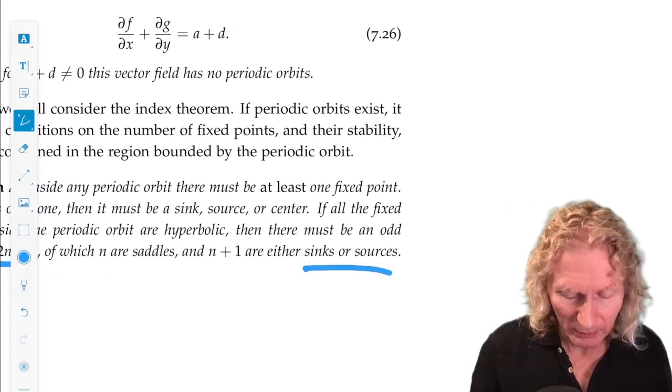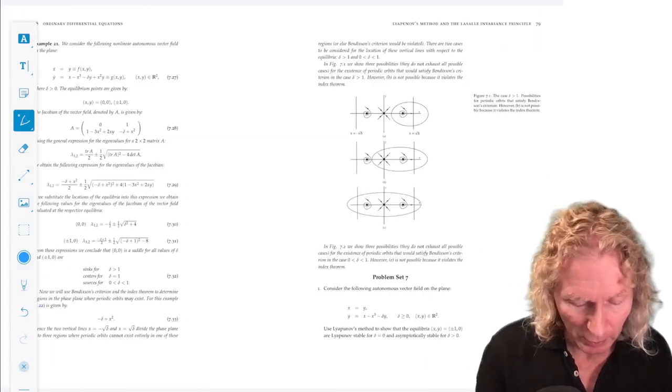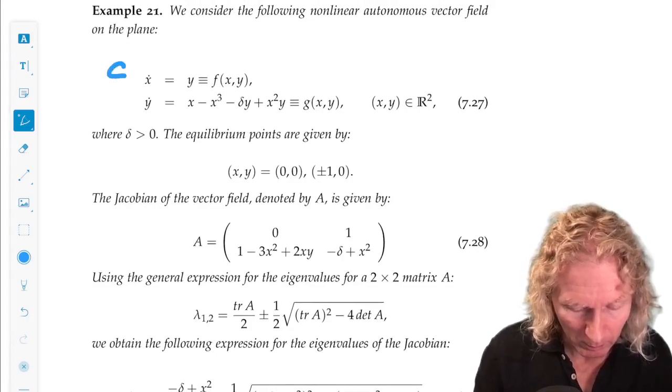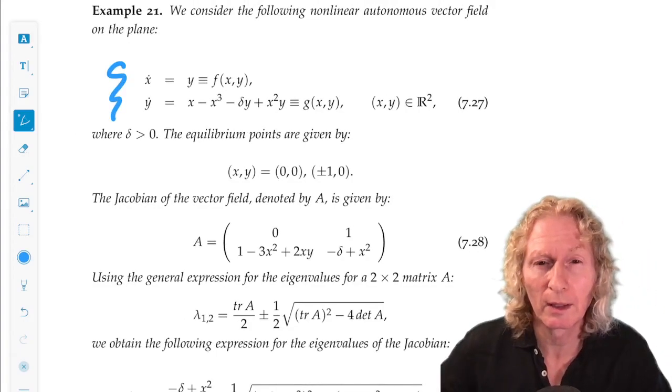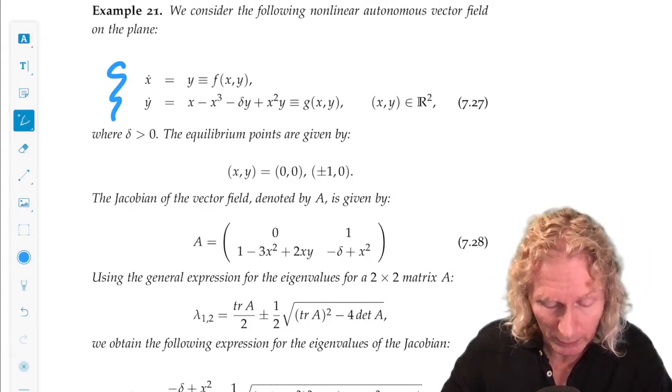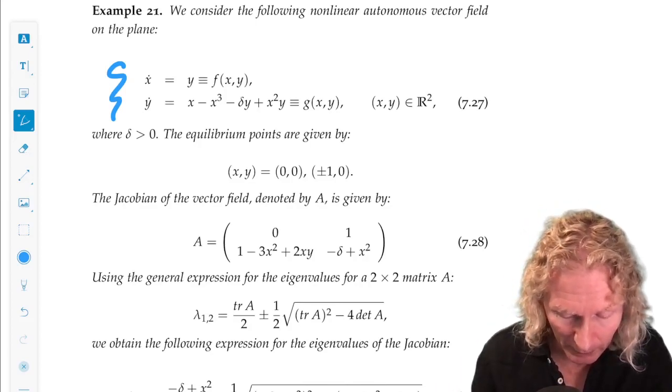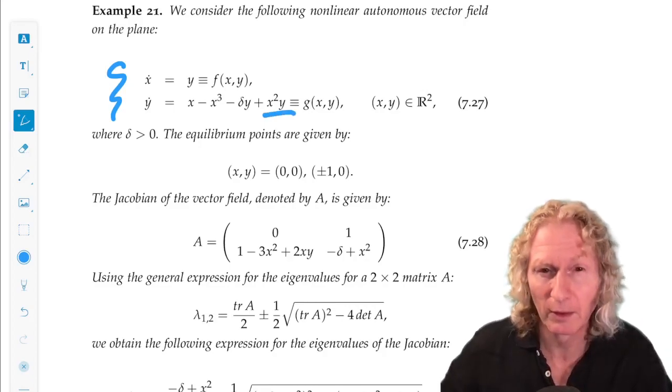So let's see how would we use this in conjunction with Bendixson's criteria. So here's an example. Now this example looks a lot like the one at the end of the last chapter and the one we treated with a solid variance principle. It is except, and it's a big except, we've added this extra term.